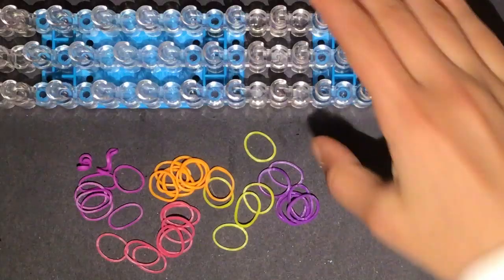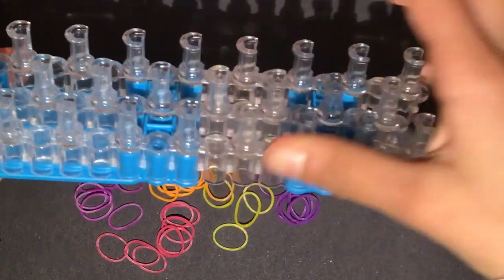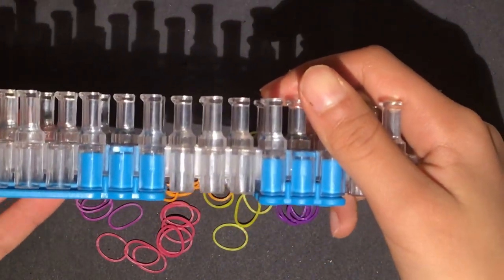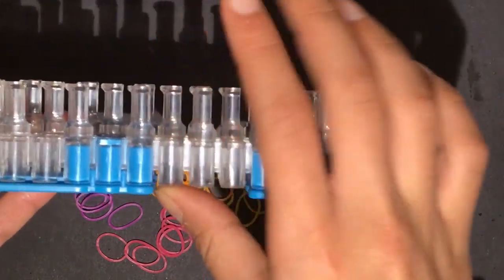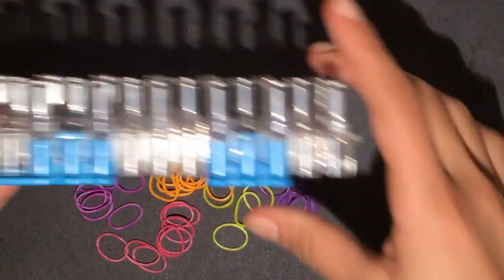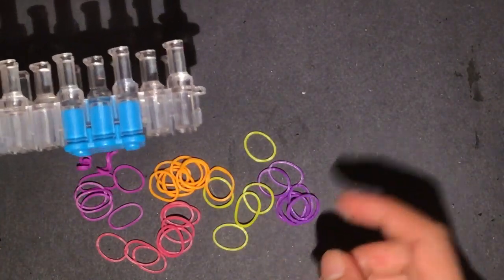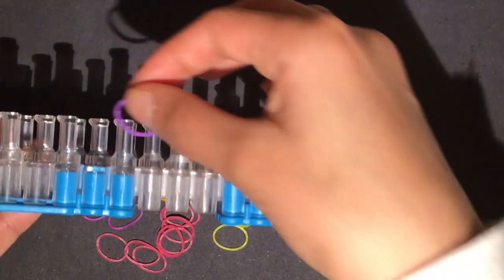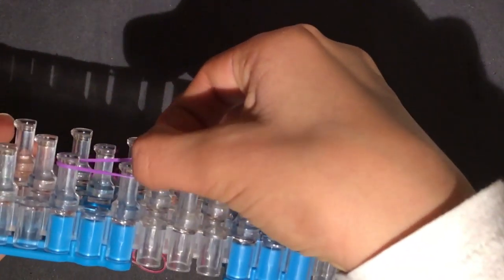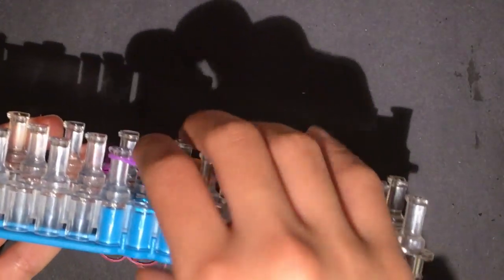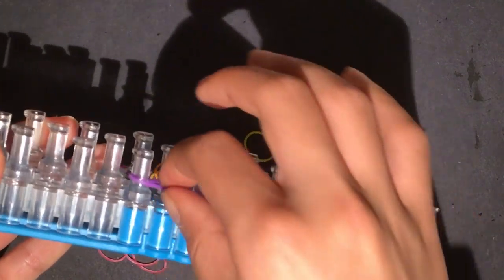Okay so I'm just gonna hold it up so you guys can see it better. So we only will need two pegs. Basically what you first want to do is take your first color and put it on in a figure eight.